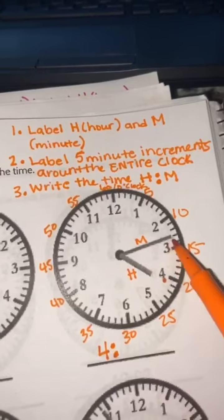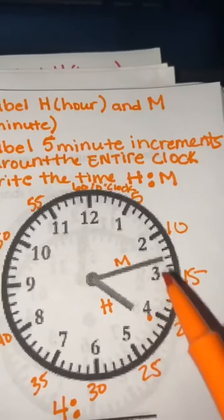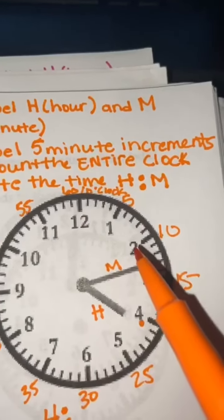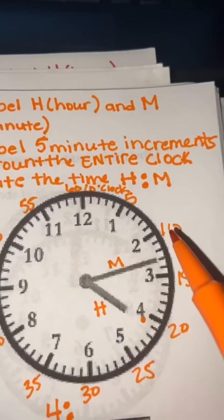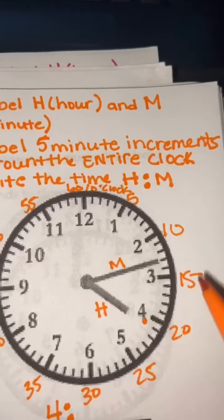Now, my minute hand is in between. Like I said, my minute hand is in between the two and the three. So I know that at two, I'm at 10 minutes. But if I go to three, I'm at 15, and my minute hand is not all the way there yet.